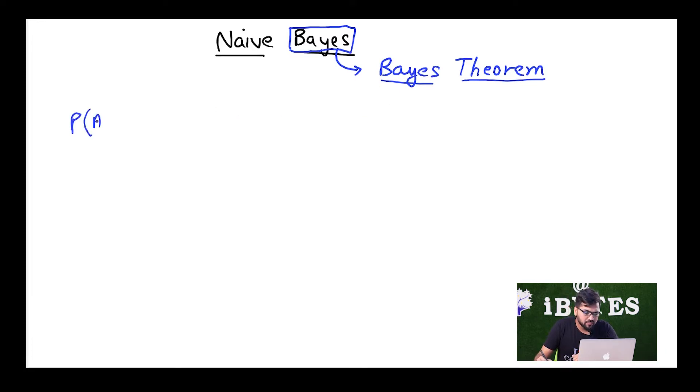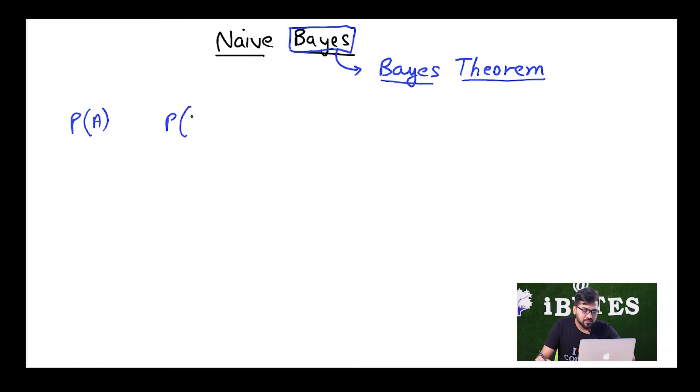If I write P(A), we already know what P(A) is. P(A) basically means the probability that event A is going to happen. Similarly, I have a thing known as P(A given B). P(A given B) means what is the probability that event A is going to happen given that B has already happened. This is what conditional probability is. Bayes theorem is basically a formula for solving conditional probability equations.